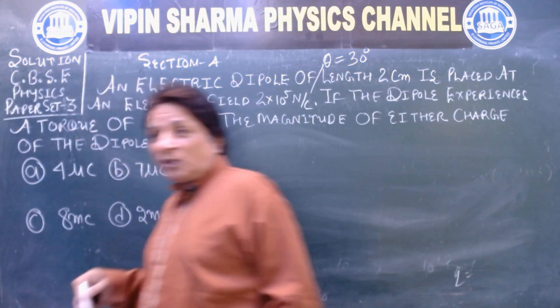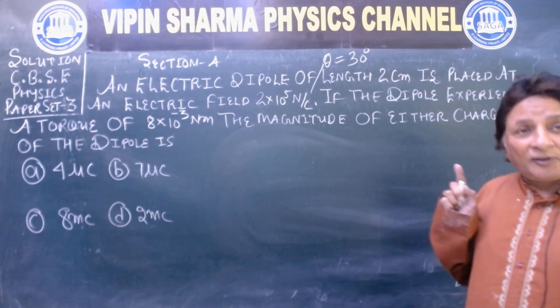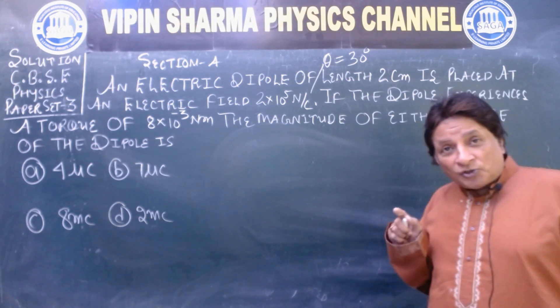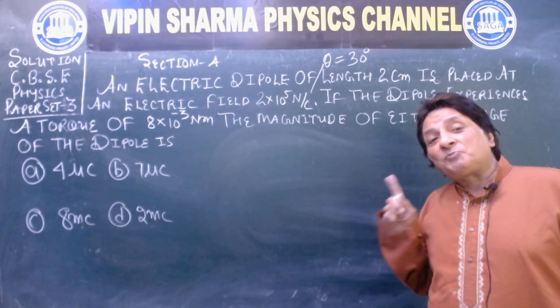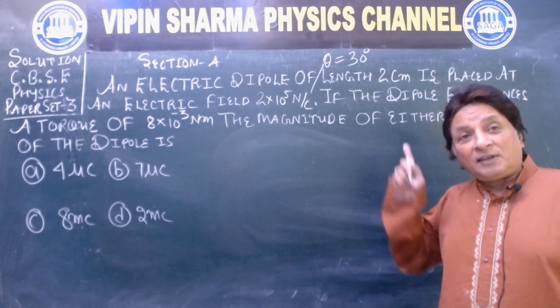So we have an electric dipole which has length 2 cm, placed in an electric field which is 2 × 10^5 Newton per Coulomb, and the electric dipole makes an angle of 30 degrees.